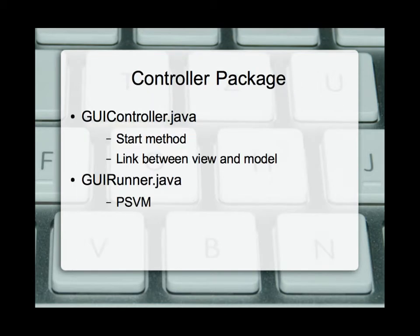In the controller package we only have two files right now: GUI controller.java and GUI runner.java. The GUI runner only has the PSVM — public static void main — because all it does is start the program. That's the standard code we've been using all year and will continue to use. In our controller.java we have our start method to control what we're starting up, and additionally we have a link between our view and our model, because the controller functions as a go-between from the view the user sees and the back-end that the programmer designed.